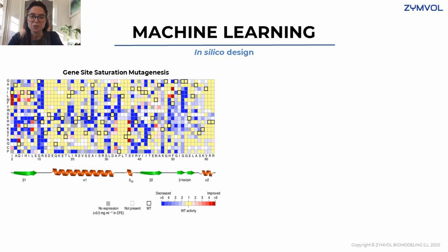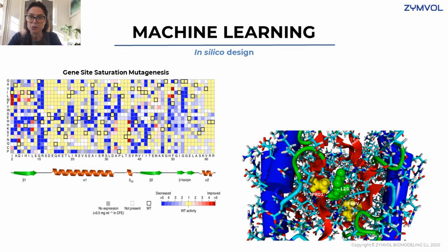We have taken data from a gene site saturation mutagenesis experiment. This is a small protein — actually an enzyme — and the data shows saturation mutagenesis at every single amino acid position. Data shown in yellow or white means activity similar to the wild type; data in blue are variants with decreased properties; and in red, they are improved variants. We then look at how the substrate is interacting with the protein — you can see on the right side the substrate in green in the active site.